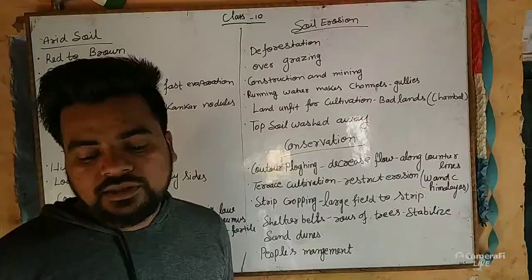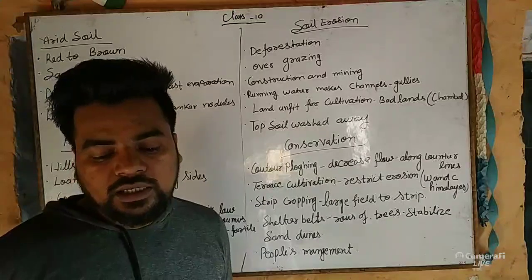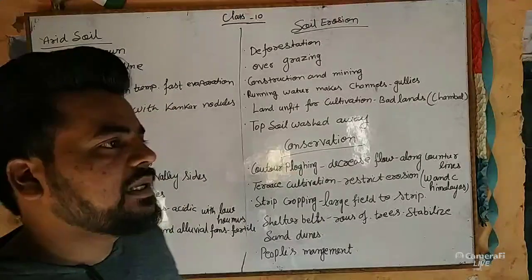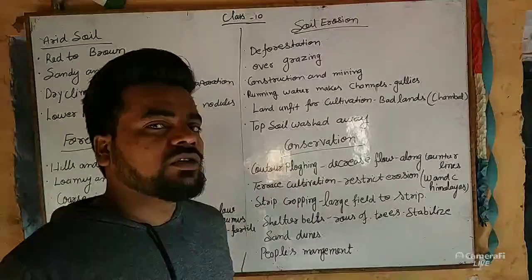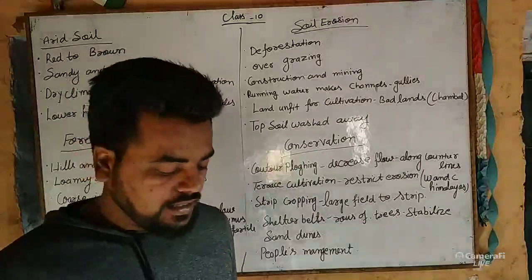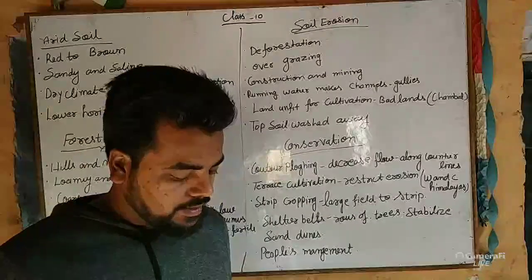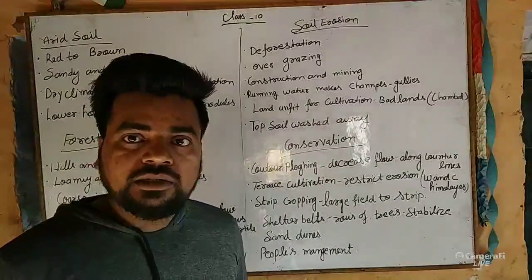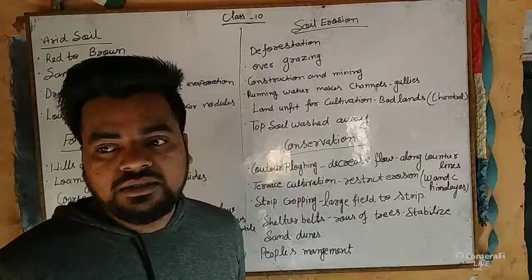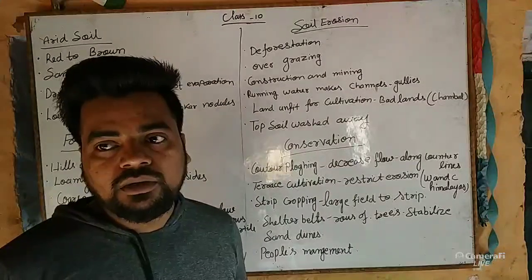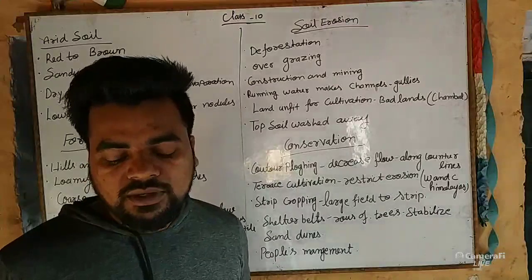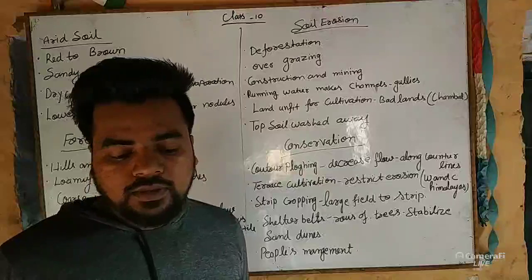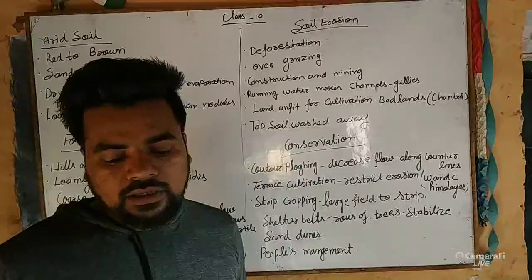Sometimes this balance is disturbed due to human activities like deforestation, overgrazing, construction, and mining. Because of these human activities, natural forces like wind, glaciers, and water lead to soil erosion.